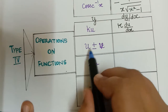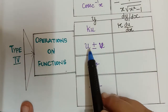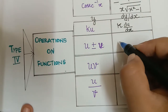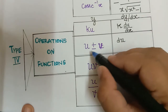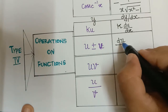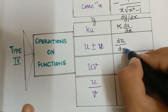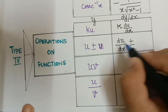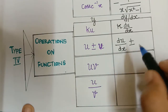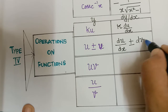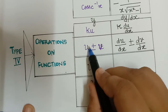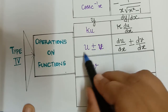Next we have the addition or subtraction of two functions, u plus v or u minus v. When you differentiate it, since it is linear, each term can be differentiated separately. So the result is du/dx plus or minus dv/dx — plus if the sign is plus, minus if the sign is minus. We can differentiate each term separately when we have addition or subtraction between two functions.